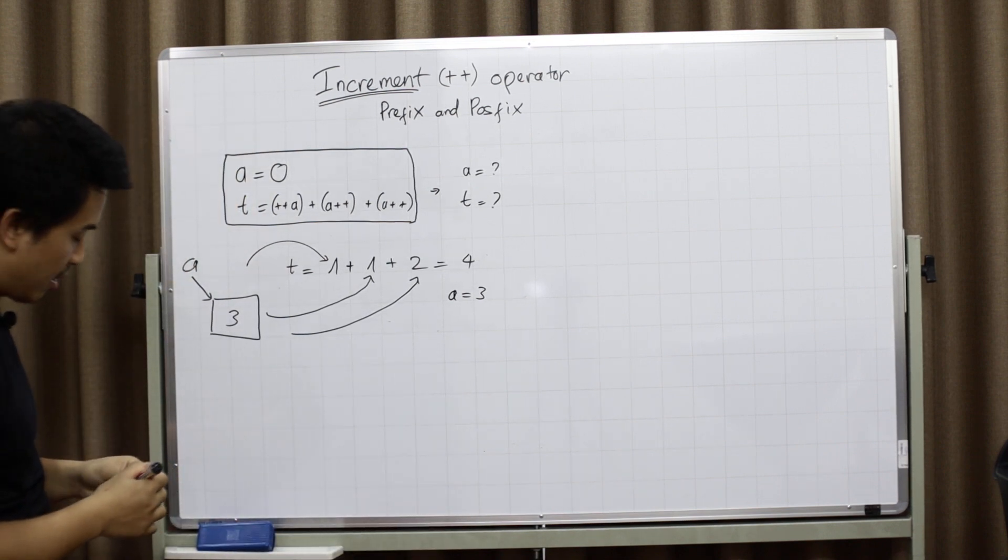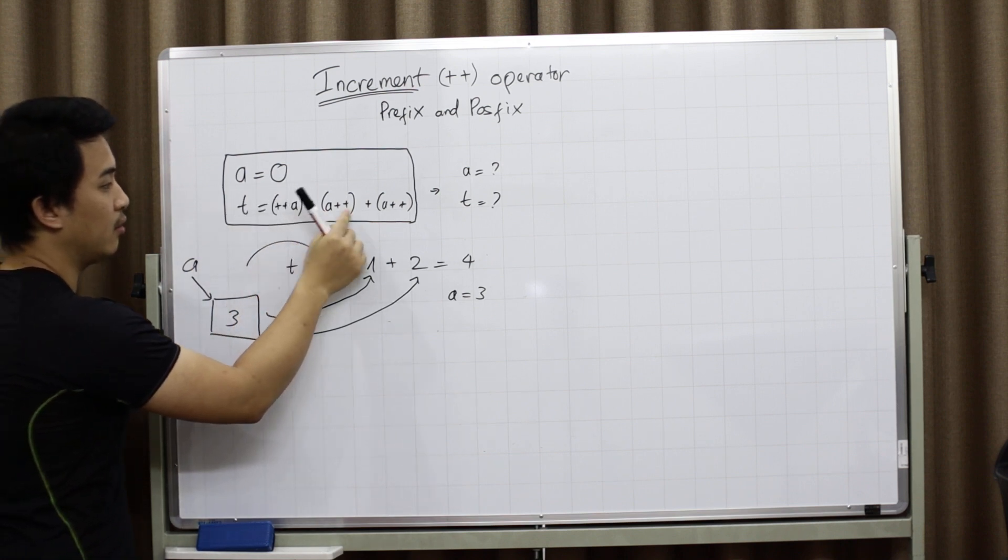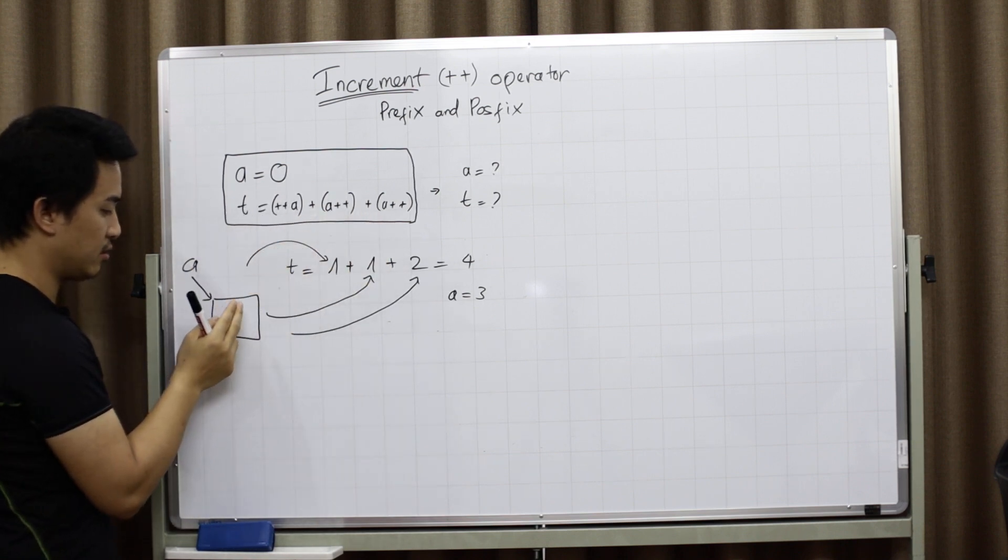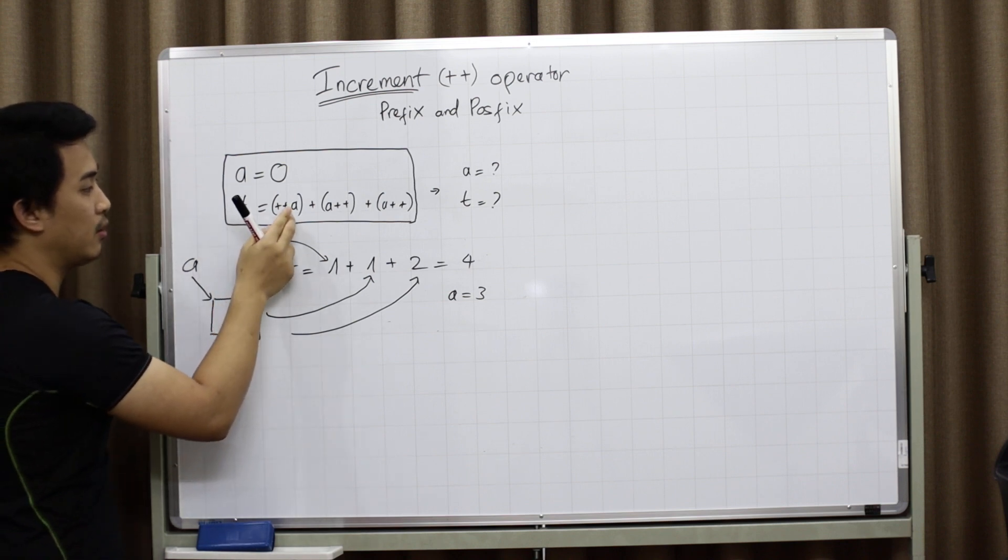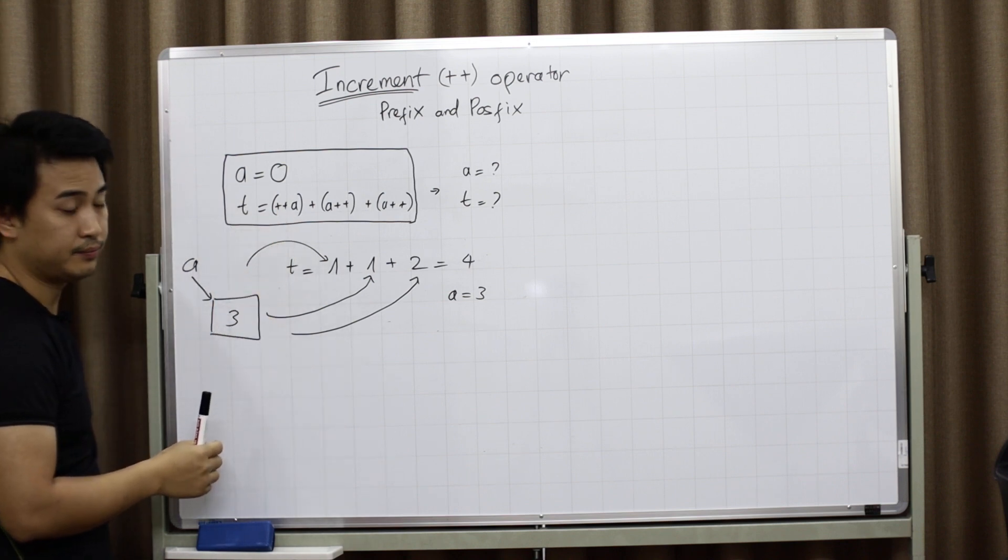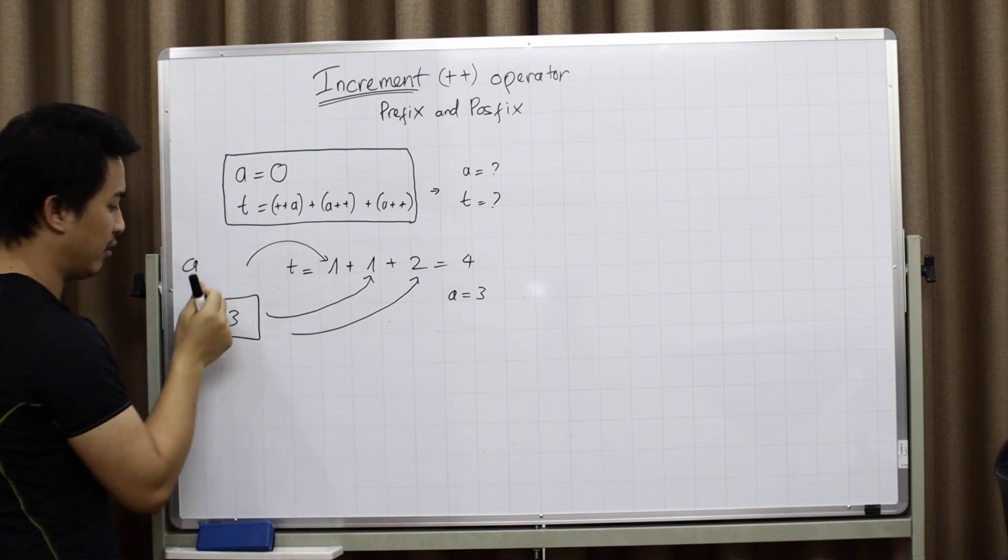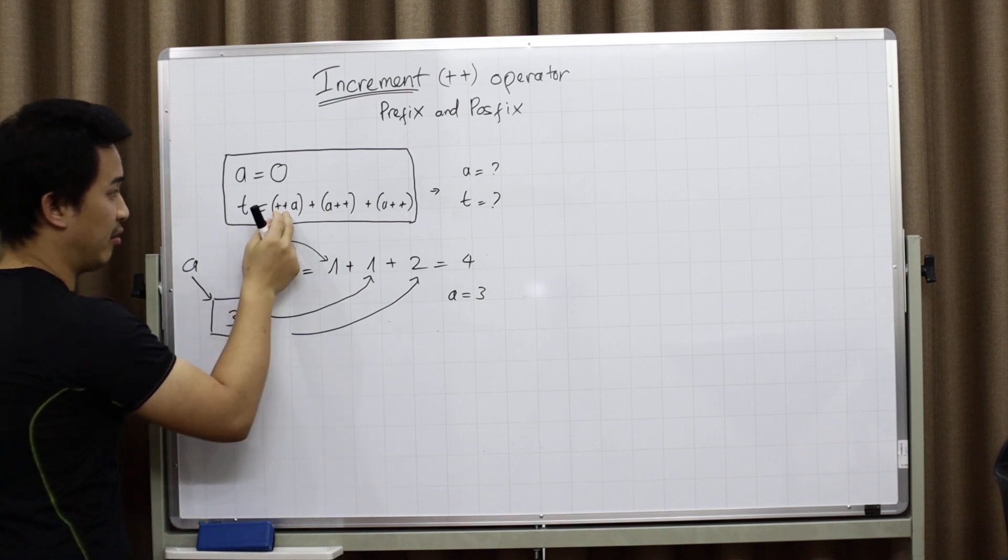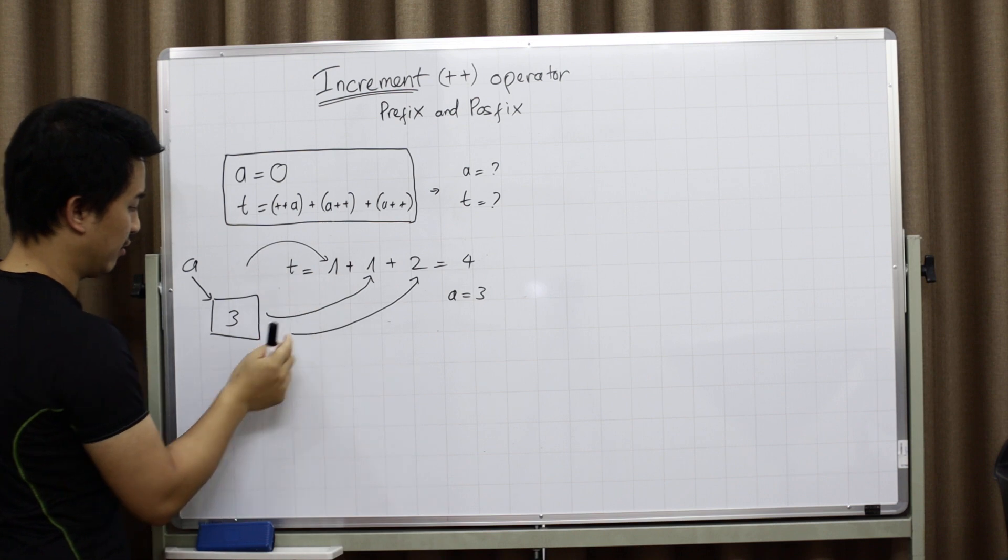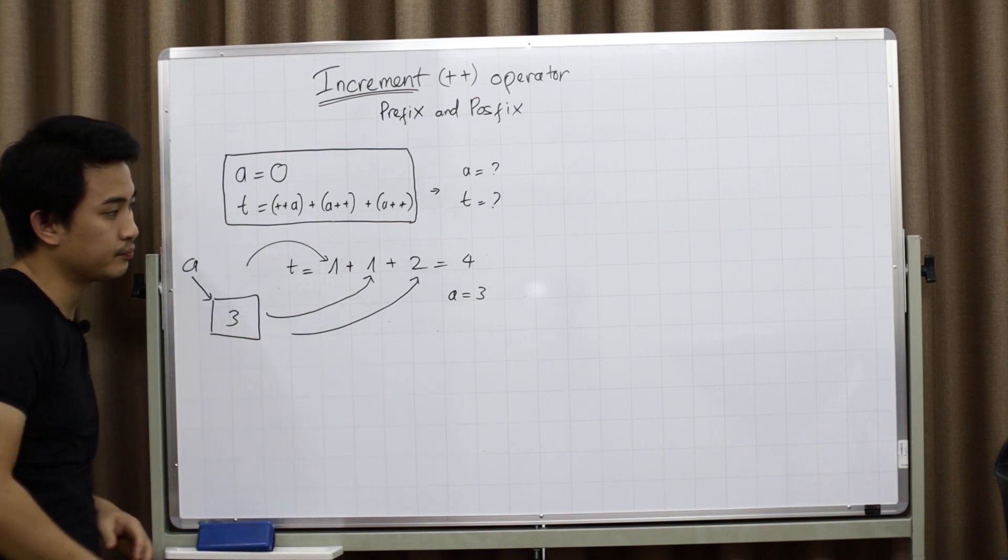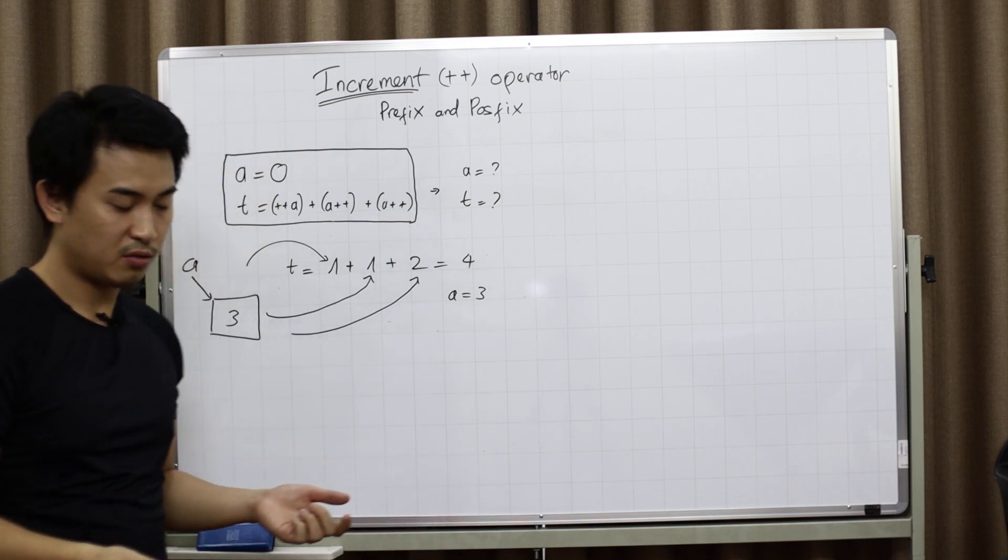So the way it actually works is when it meets the operator, it will take the value in the memory and return the value. The difference is when it gets the prefix operator, it will increase it first and return the value. And when it gets the postfix operator, it will return the value and increase it later. So it's the same with the decrement minus minus operator.